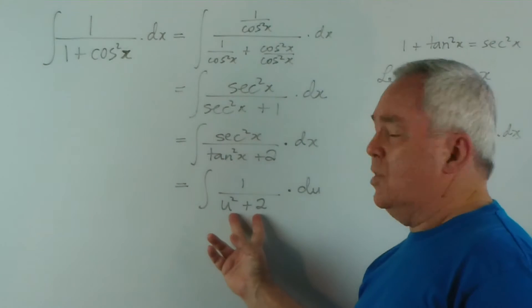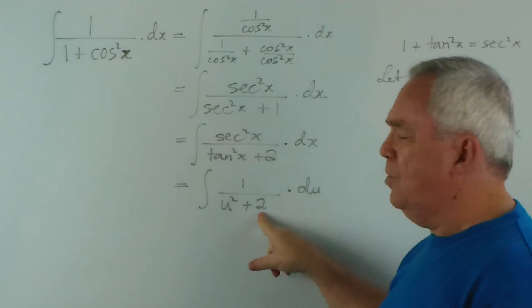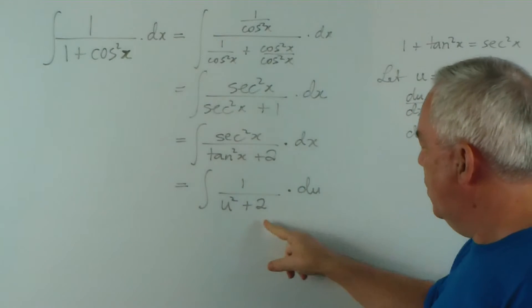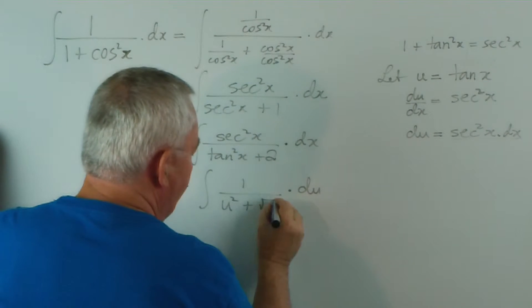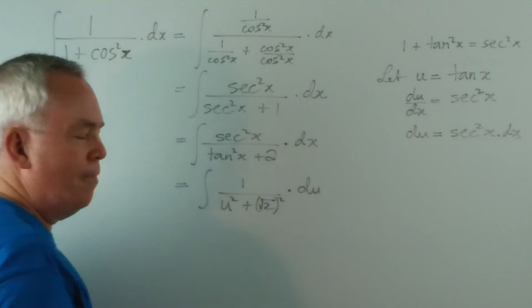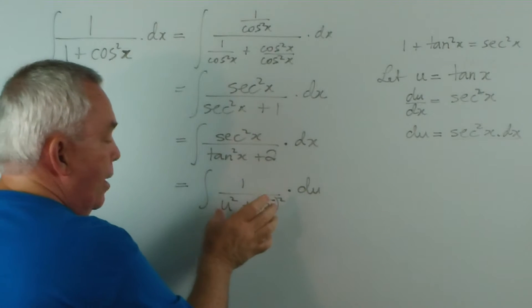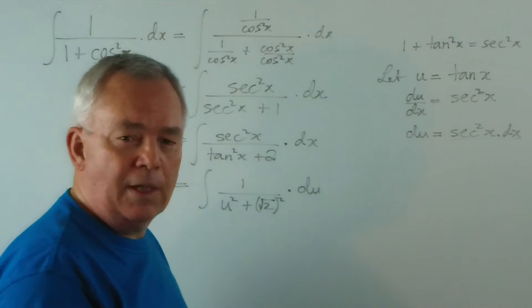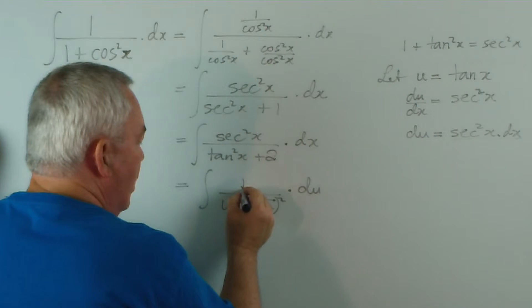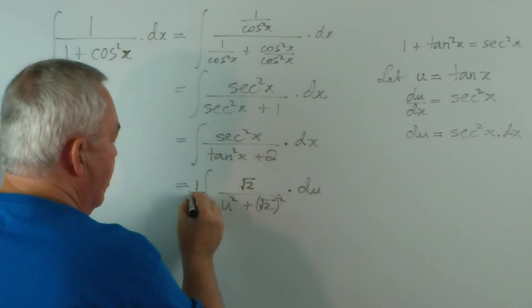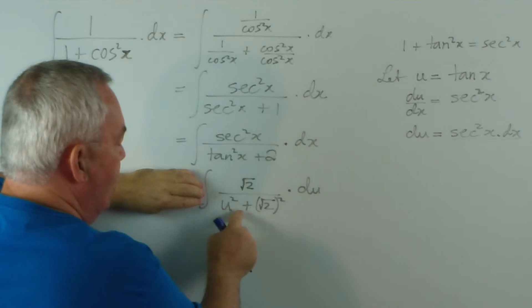Now this makes the sum of squares quite explicit. Two, of course, is a square, but it's not a square of anything pretty. I'm going to write it in so it is very explicit. 2 is root 2 squared. So we have u squared plus root 2 squared. This is a pattern for an inverse tan function. I'm going to complete the pattern. We would have a root 2 on top and a 1 on root 2 out the front to compensate for it. And now we're integrating a over u squared plus a squared.